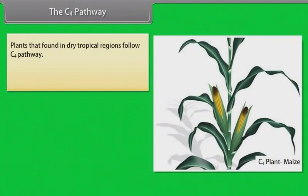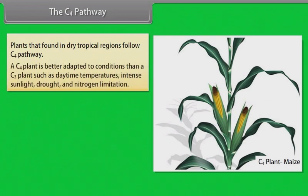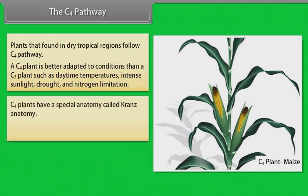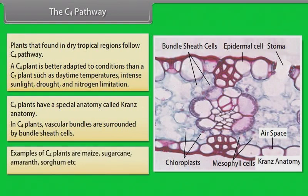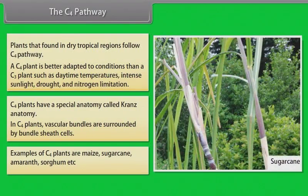Plants found in dry tropical regions follow the C4 pathway. A C4 plant is better adapted to conditions such as daytime temperatures, intense sunlight, drought, and nitrogen limitation. C4 plants have a special anatomy called Kranz anatomy, in which vascular bundles are surrounded by bundle sheath cells. Examples of C4 plants are maize, sugarcane, amaranth, and sorghum.